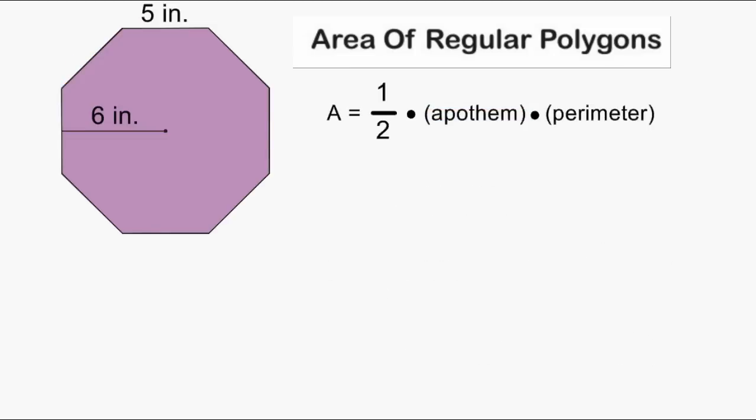Now we are going to demonstrate how to use this formula using a regular octagon. The first thing we have to do is figure out what the length of the apothem is of our regular octagon and we can see that the apothem is 6 inches.